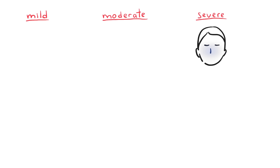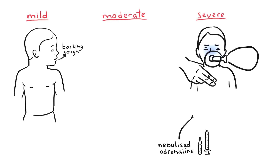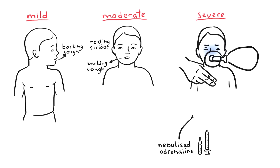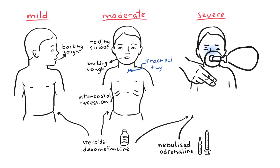If the child presents cyanosed with a decreased level of consciousness, this is life-threatening and immediate resuscitation is warranted, with oxygen and nebulised adrenaline to help reduce the swelling in the respiratory tract. Mild croup typically has a barking cough without inspiratory stridor. A single dose of steroids such as dexamethasone is recommended in all patients with croup, including those with mild disease who present to the hospital. Moderate disease requires steroids, or nebulised adrenaline if steroids are not tolerated.